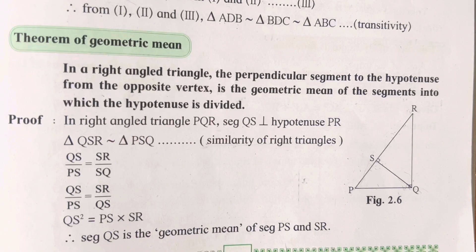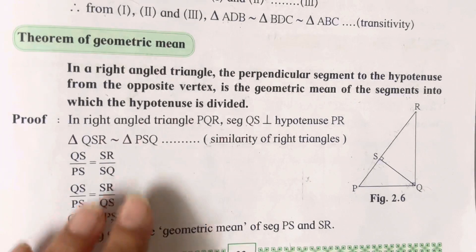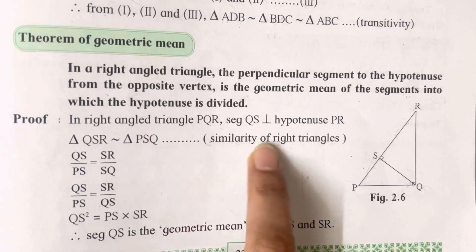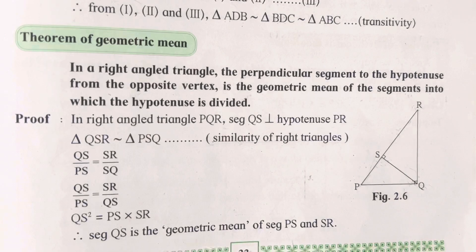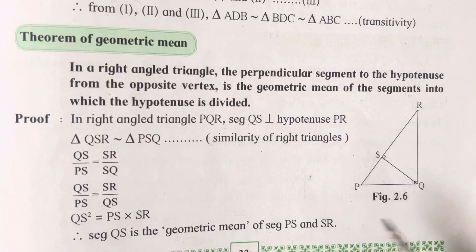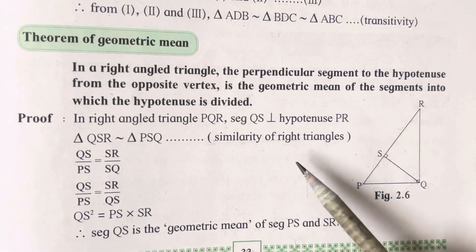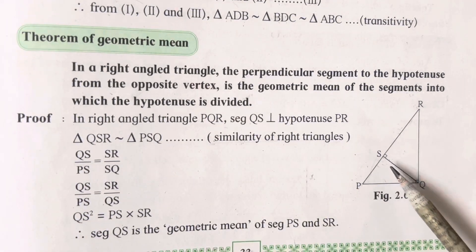Directly you can write it. If you have understood the similarity of right-angled triangle theorem, you can mention it and prove it, then prove the theorem of geometric mean. But it will get lengthy—no need for so much effort when we can directly mention similarity of right-angled triangles.